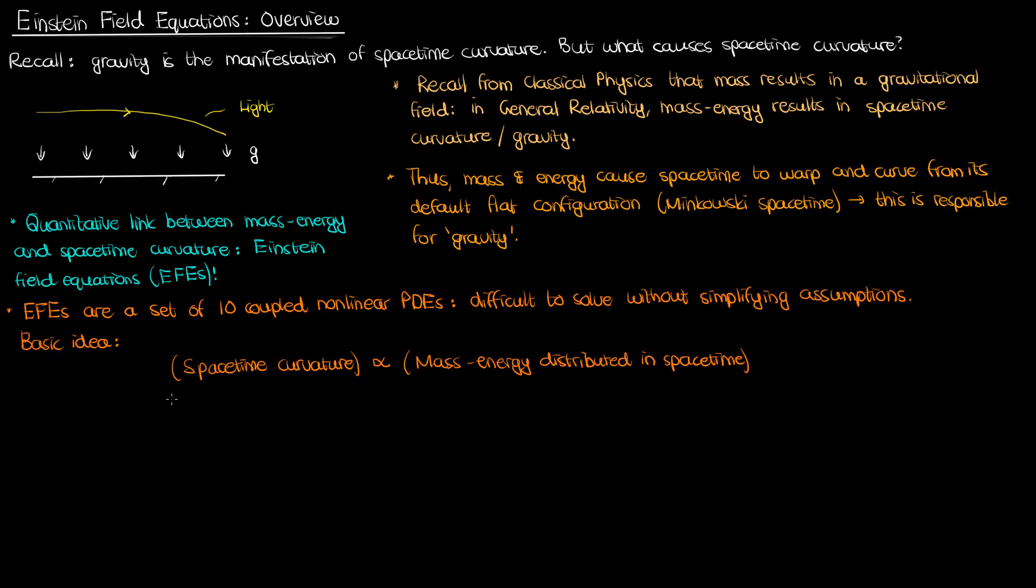I've written this direct relationship as a proportionality, so spacetime curvature is, in a sense if we describe it properly enough, proportional to the mass-energy distribution in spacetime. We can then express this proportionality as an equation with the proportionality constant kappa. In a future video, we'll show that this kappa is 8πG over the speed of light c to the power 4.